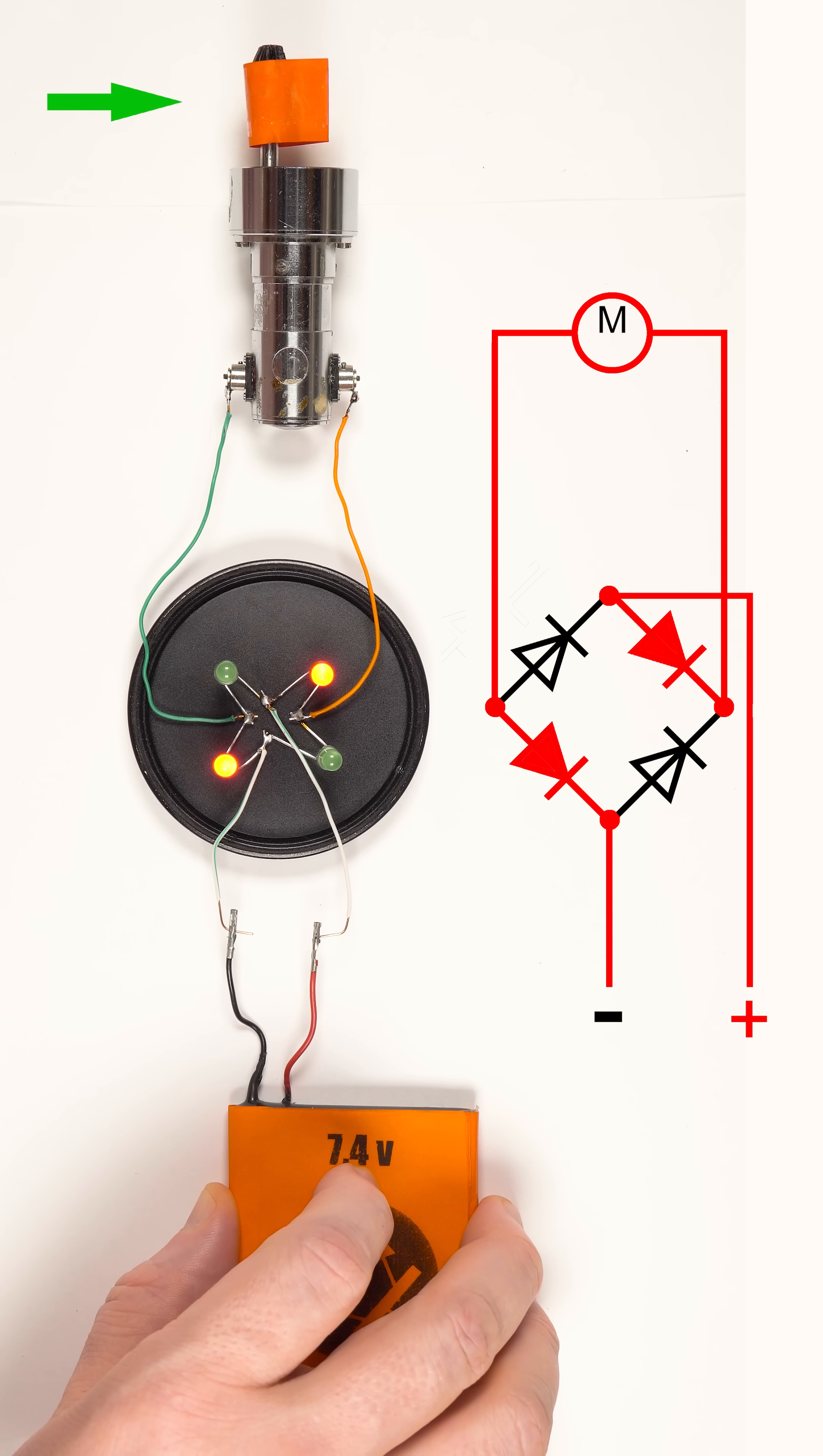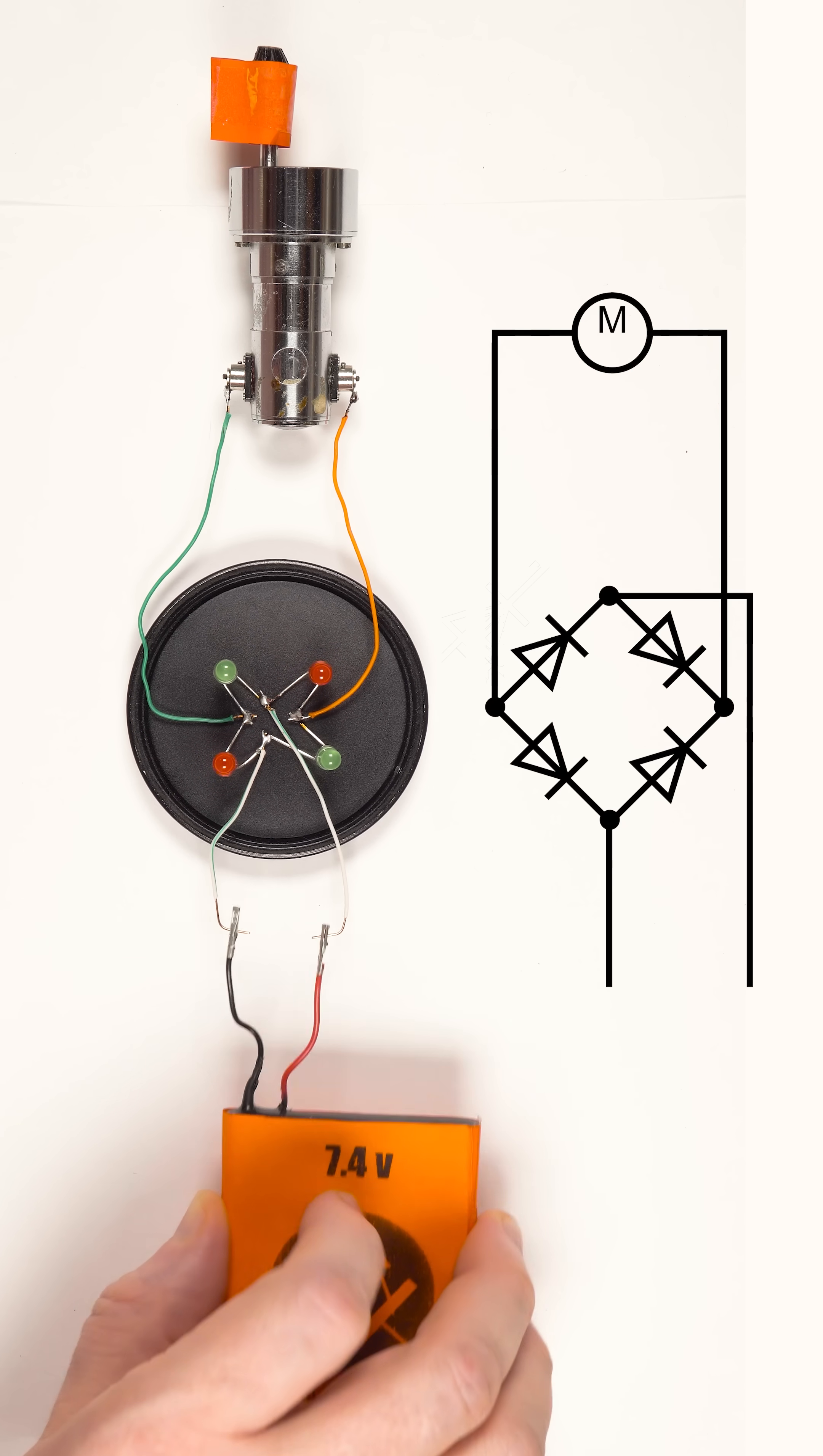Now the motor rotates in the same direction no matter the battery polarity. What's more important, we can also see how the current flows within the bridge rectifier.